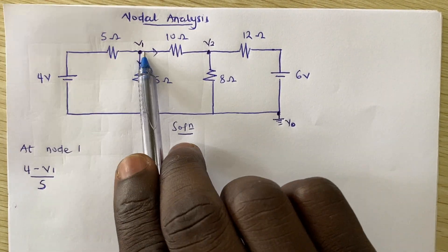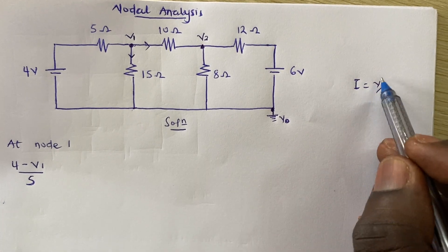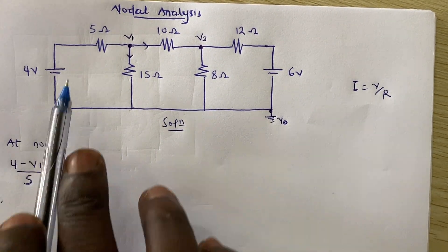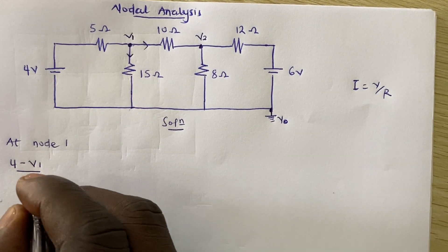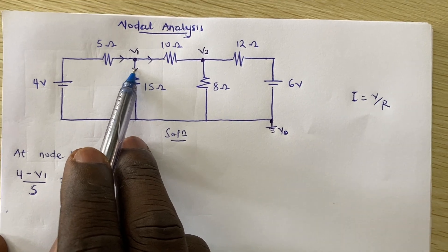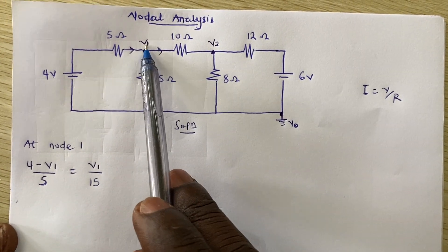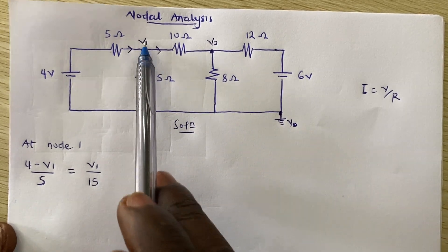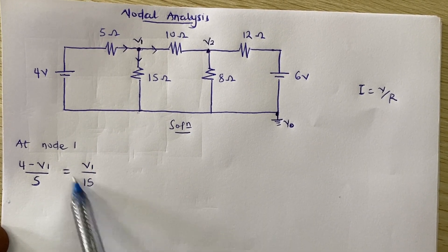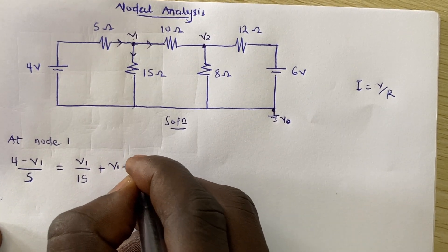We are assigning node voltages but we are interested in the current. From Ohm's law, I = V/R, so it is the voltage difference divided by the resistance. The current entering Node 1 equals the currents leaving: (4 − V1)/5 = V1/15 + (V1 − V2)/10. The V1/15 term comes from V1 minus V0 (the reference node, which is zero) divided by 15.